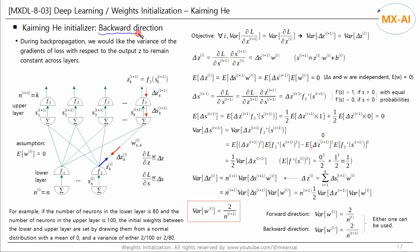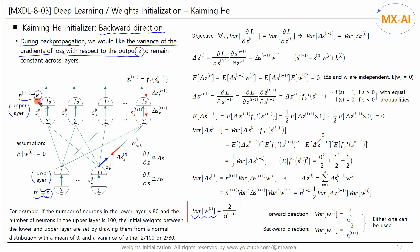Next, let's consider backward propagation in a neural network. During backpropagation, we would like the variance of the gradients of the loss with respect to the output Z to remain constant across layers. Let's consider a sub-network with N neurons in the lower layer and K neurons in the upper layer. The output of the lower layer is S_i and the upper layer is S_{i+1}. The activation functions F1 and F2 are both ReLU, and the weight matrix between the layers is W_i. We would like to initialize W_i efficiently using a normal distribution with mean 0 and variance sigma squared, and find the optimal sigma squared.